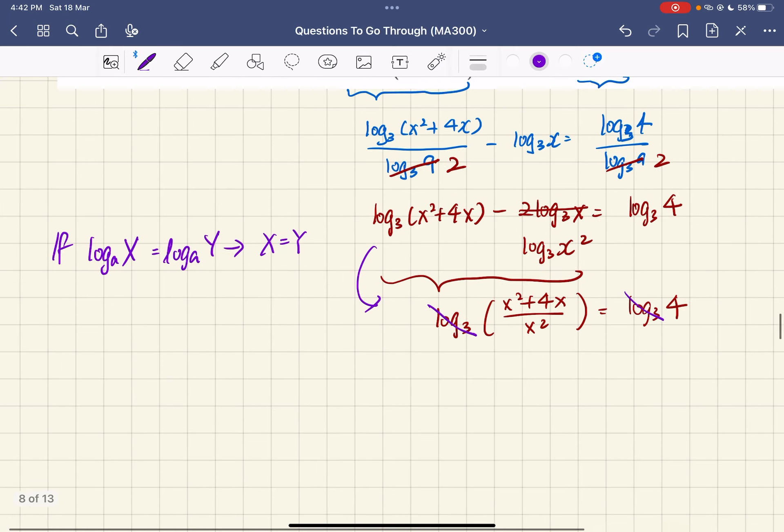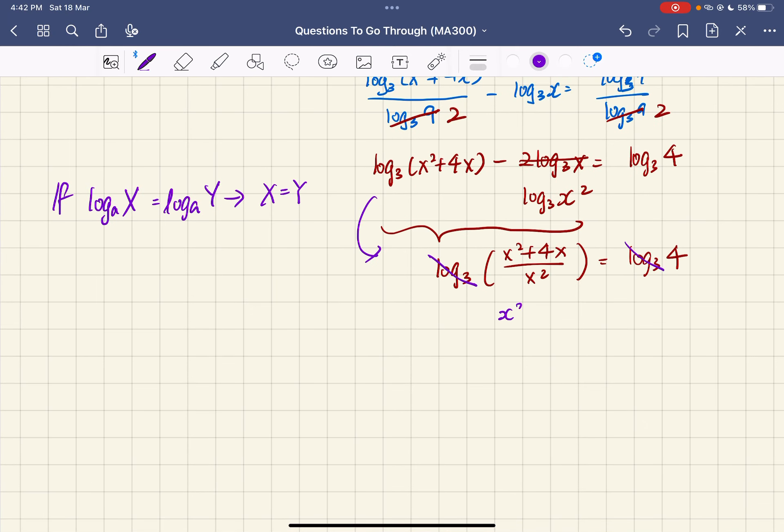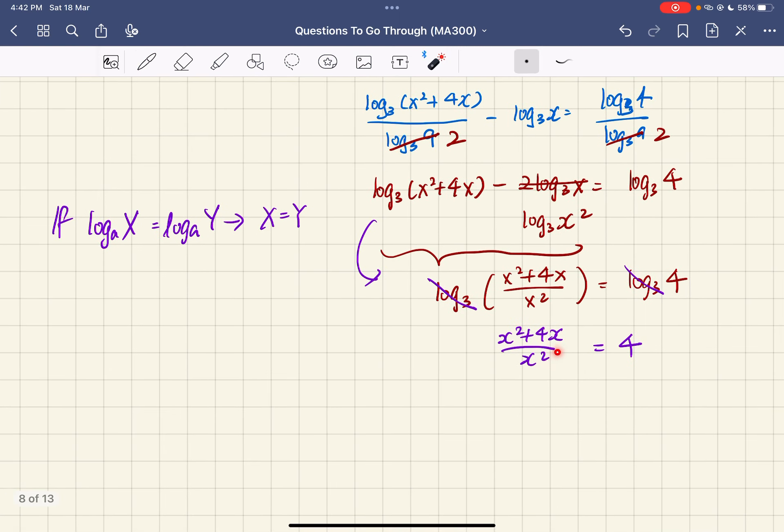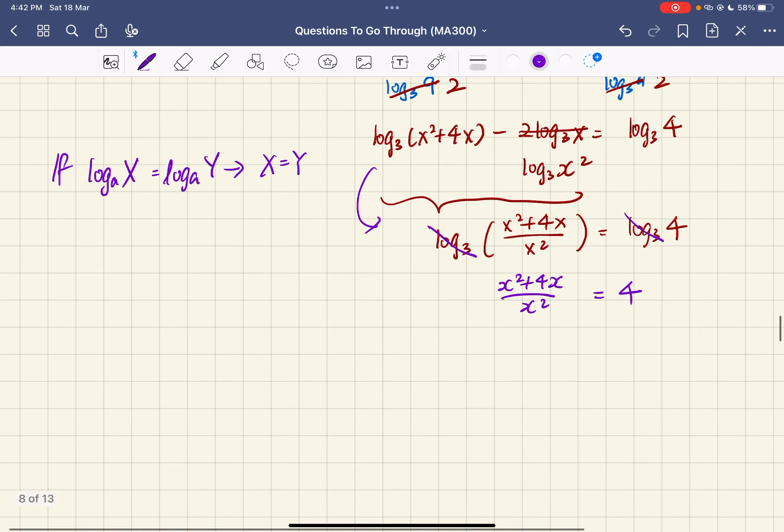This allows you to take away the log base 3. Then it tells you that x squared plus 4x over x squared equals 4. You have to be careful that the values inside must not violate the input of the logarithm. Here, x must be positive, because log cannot take in a negative input.